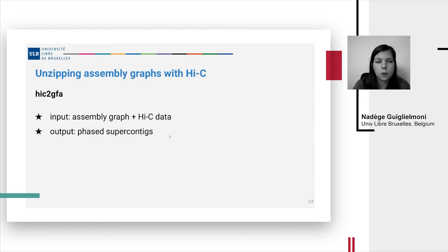For that we have developed the tool HiC2GFA that unzips assembly graphs with Hi-C data. So unzipping means that we open the assembly graph to separate the haplotypes. And since HiC2GFA only connects contigs that have a potential link with strong Hi-C support, then we obtain super contigs that are gap free.